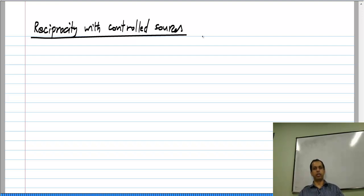And we have defined reciprocity. You can define it in terms of these two port parameters. Z12 will be Z21, Y12 will be Y21, H12 will be minus H21, or G12 will be minus G21.